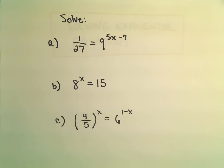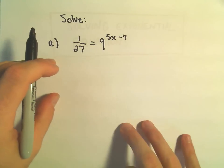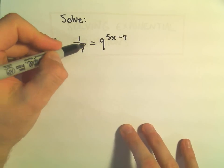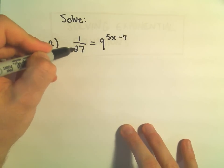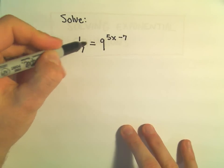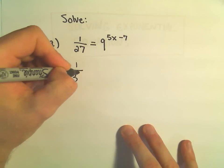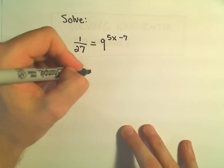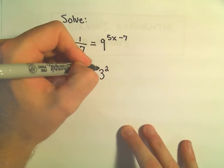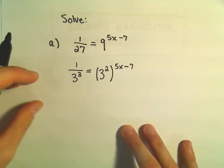For part a, we've got 1 over 27 equals 9 raised to the 5x minus 7. The thing that sticks out is that 27 is a power of 3 — and I know it's 1 over 27, but in the denominator 27 is a power of 3, and 9 is also a power of 3. So I'm going to rewrite 27 as 3 cubed, 9 as 3 squared, and then we still have our 5x minus 7.